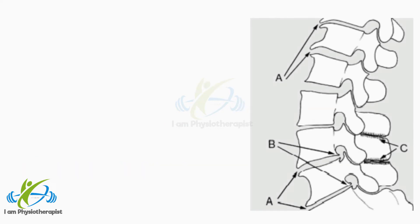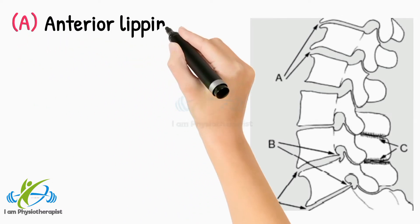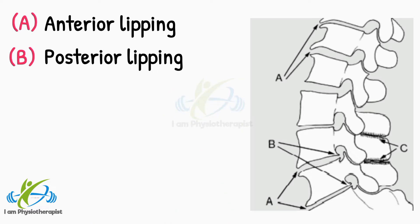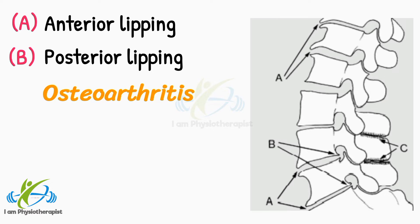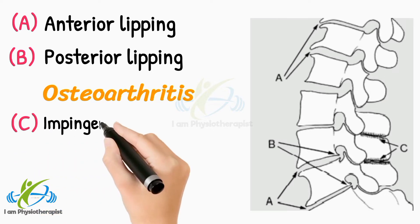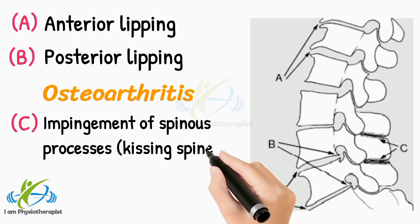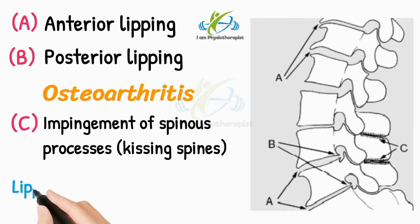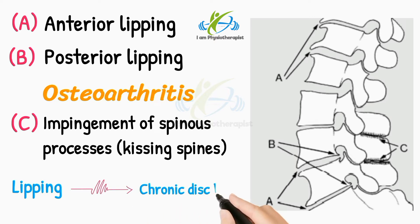In this radiograph, point A shows anterior lipping; point B shows posterior lipping. Lipping is also the main feature of osteoarthritis. At point C, note impingement of spinous processes — kissing spines. Lipping is seen in chronic disc lesions, mainly at L5-S1, but also at the other rarer disc prolapse sites.